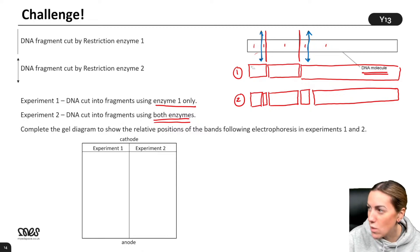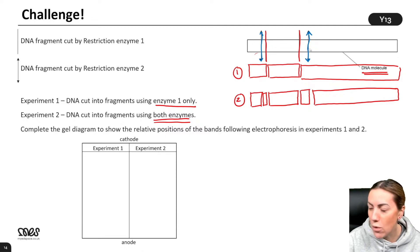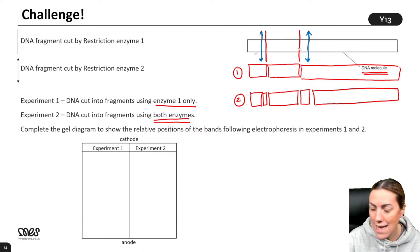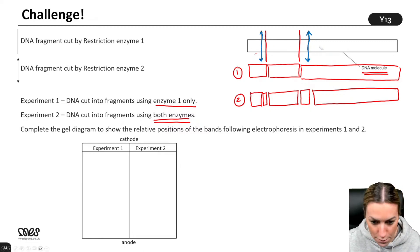The line shows where it's cut. The red lines show where enzyme one cuts, the blue arrows show where enzyme two cuts. If I'm using both of those enzymes, I'm going to cut in all those locations. So I'm going to get one, two, three, four, five fragments.